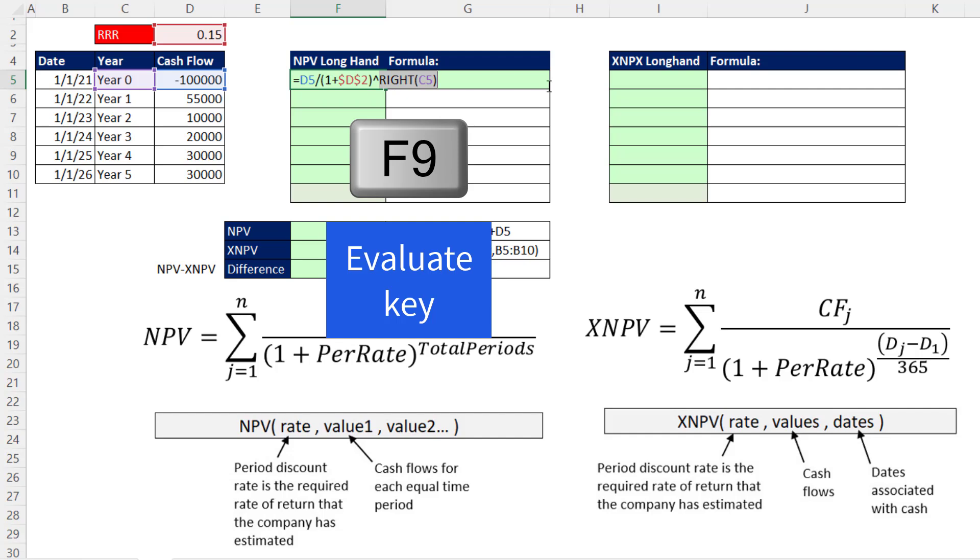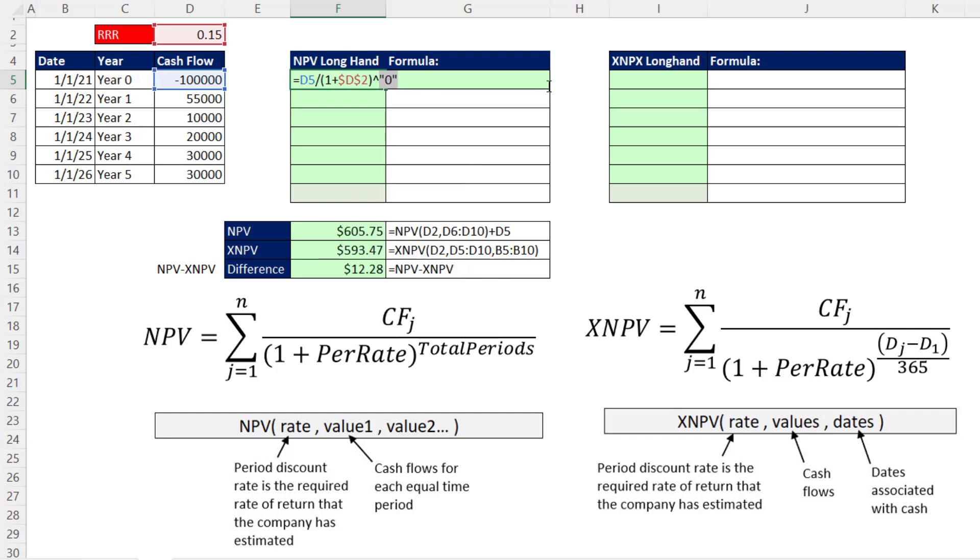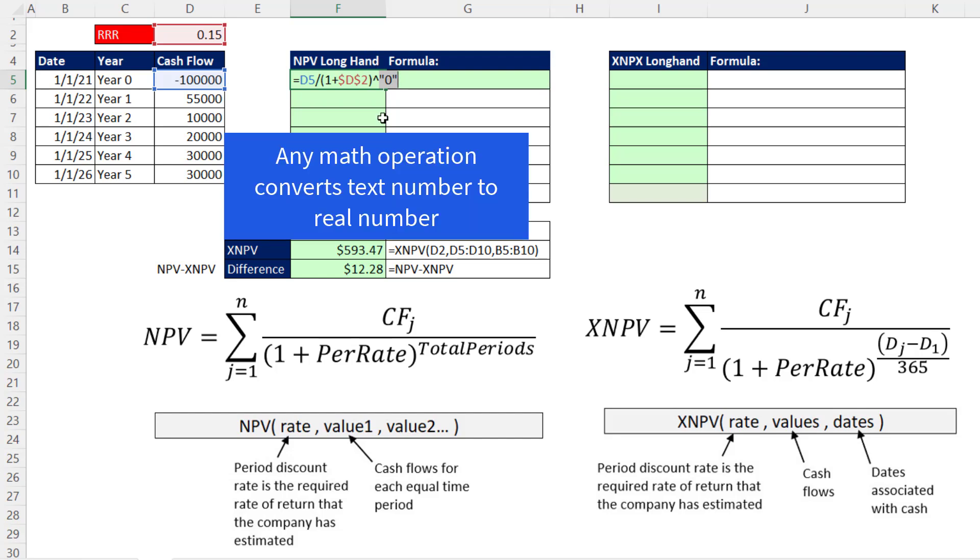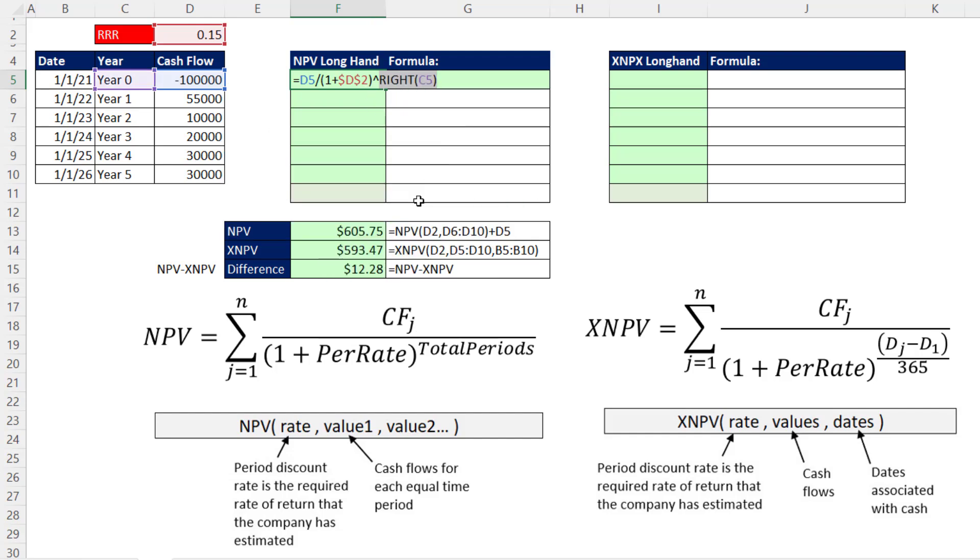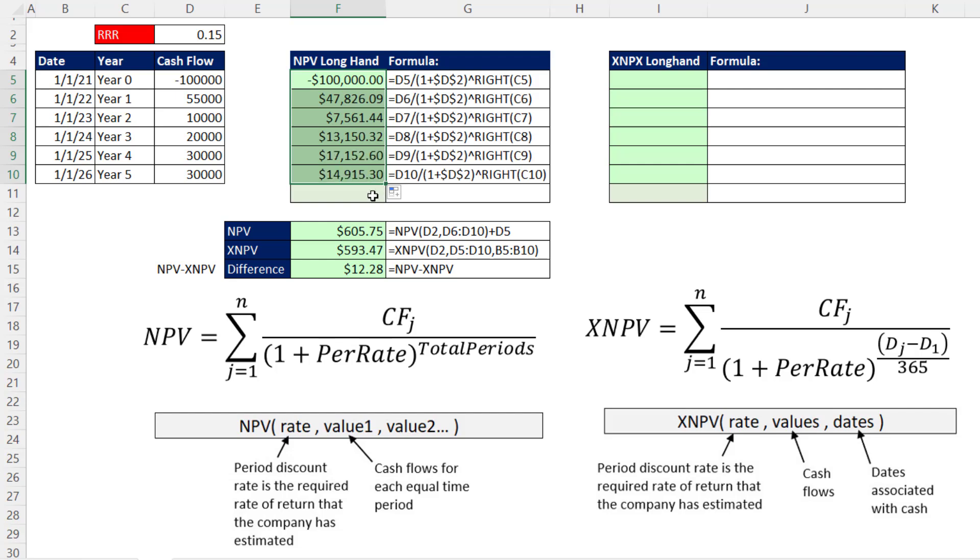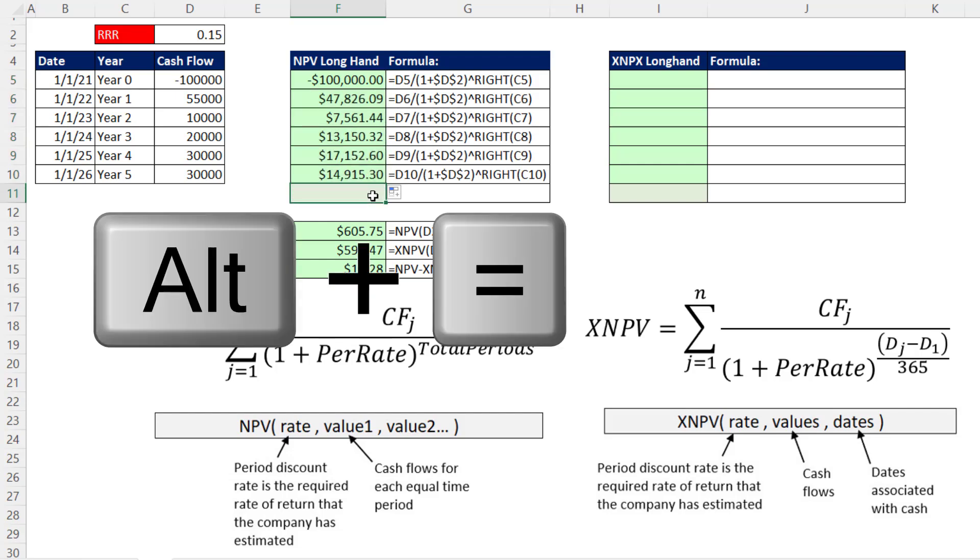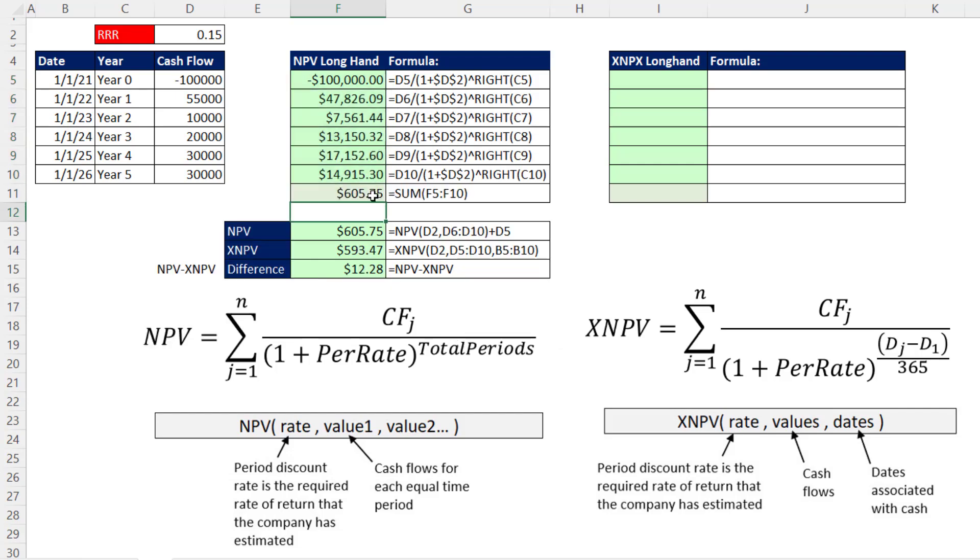If I highlight just this and hit the F9 key, that is not a number. That's a text number. But guess what? Any math operation will convert a text number back to a number. So that exponent will work. Control-Z. And that's our formula. Control-Enter. Times 0, of course, gives us no discounting at all. I copy it down. Come to the bottom, Alt-Equals, and Enter.